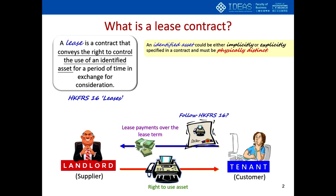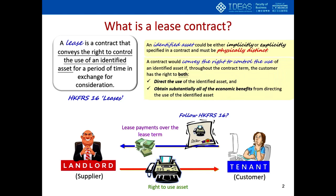The second issue is whether the contract conveys the right to control the use of an identified asset to the customer. According to the standard, two conditions must both be fulfilled: the customer must be able to direct the use of the identified asset, and be able to obtain substantially all the economic benefits from directing the use of that identified asset.